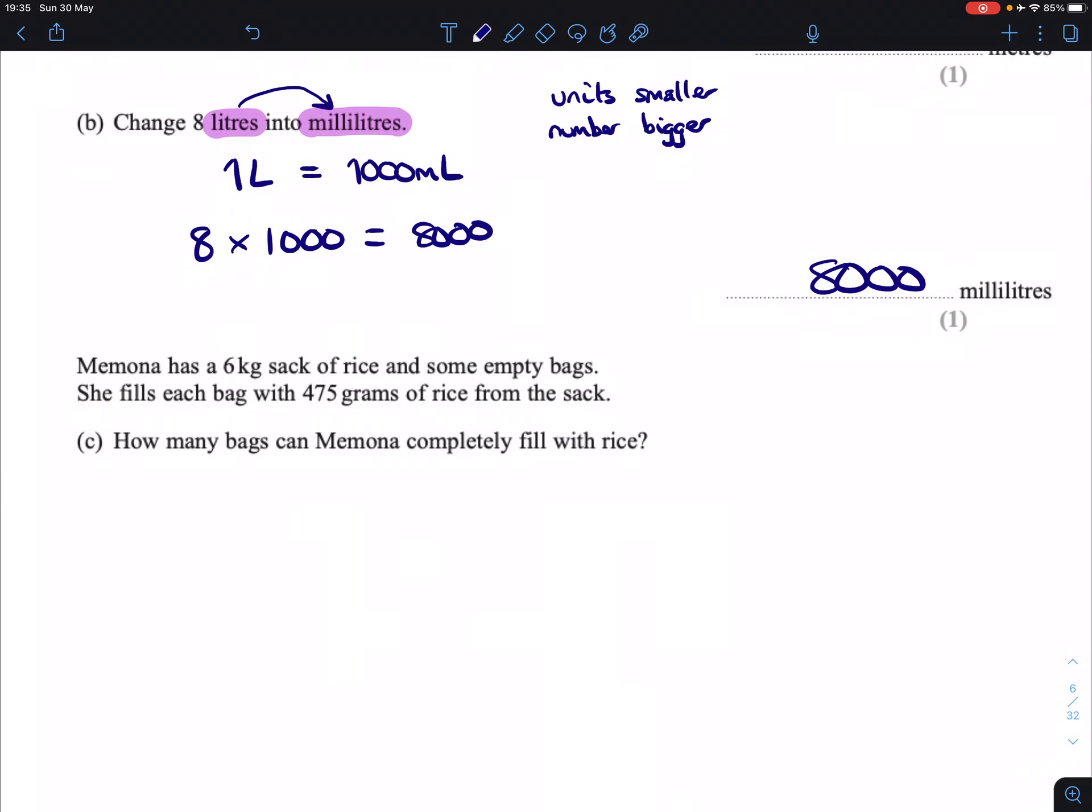Momona has a 6 kilogram sack of rice and some empty bags. She fills each bag with 475 grams of rice from the sack. How many bags can Momona completely fill with rice? So we take our 6 kilograms, first of all, and we're going to convert that into grams, because we're talking about 475 grams for each bag. If we want to be able to compare these measurements, we're going to need to have them with the same units.